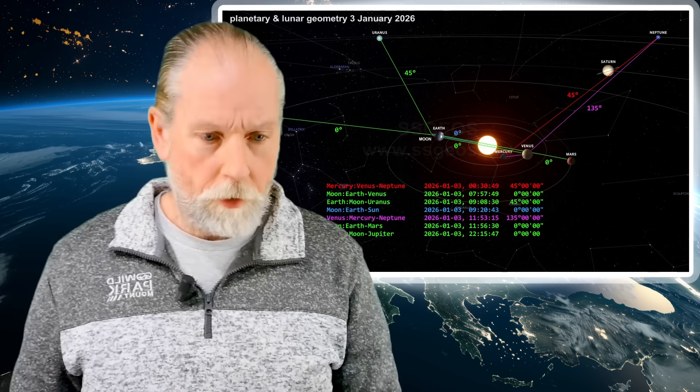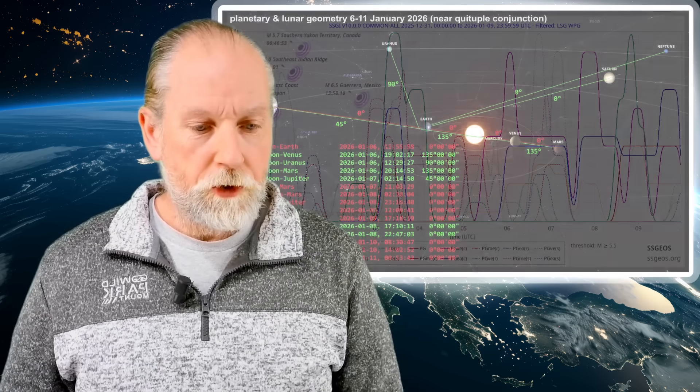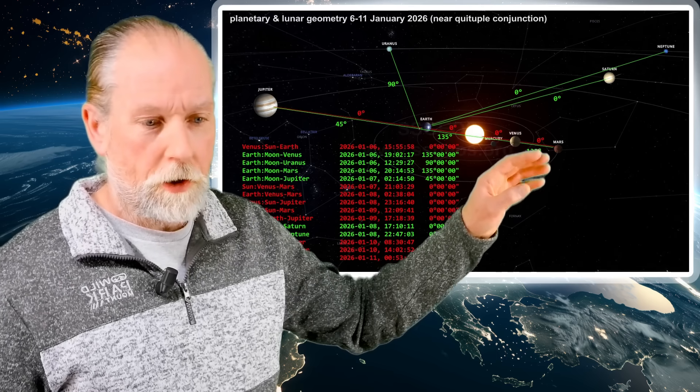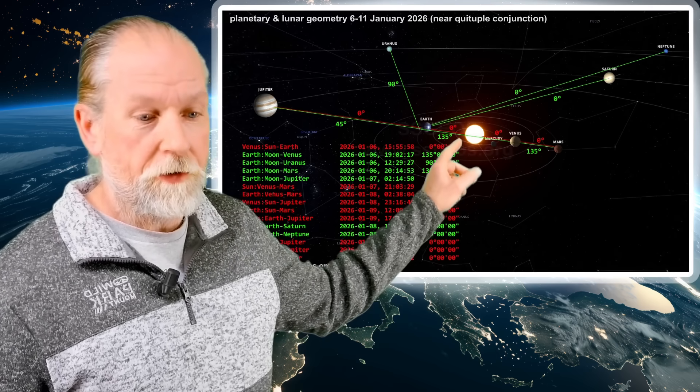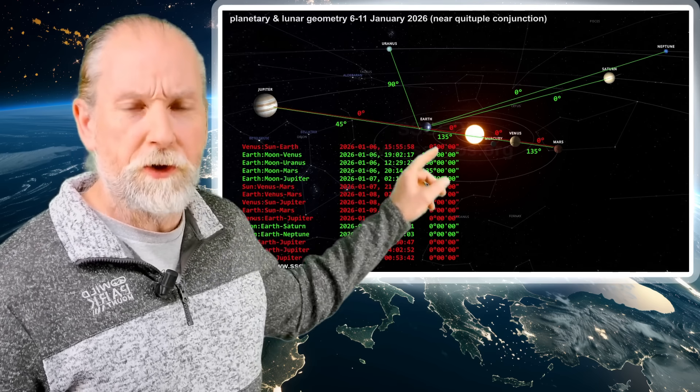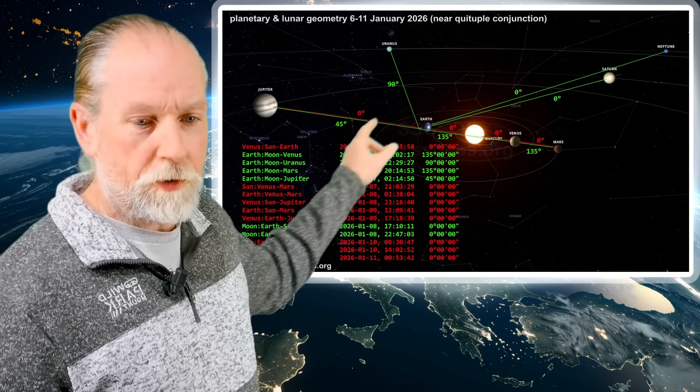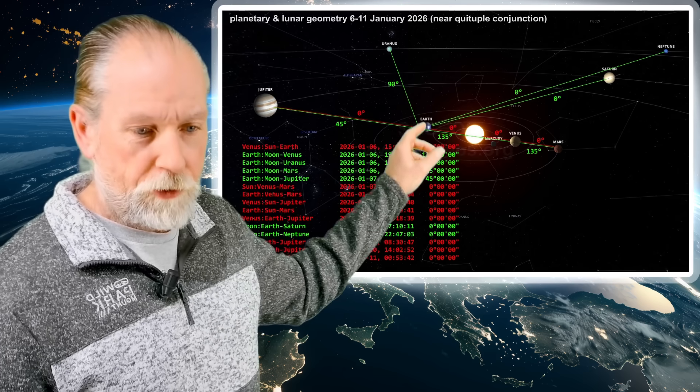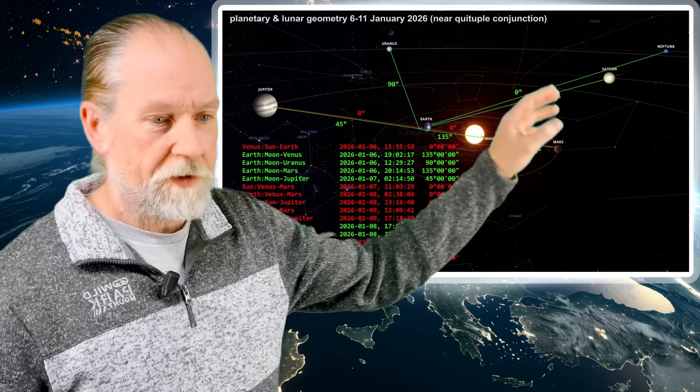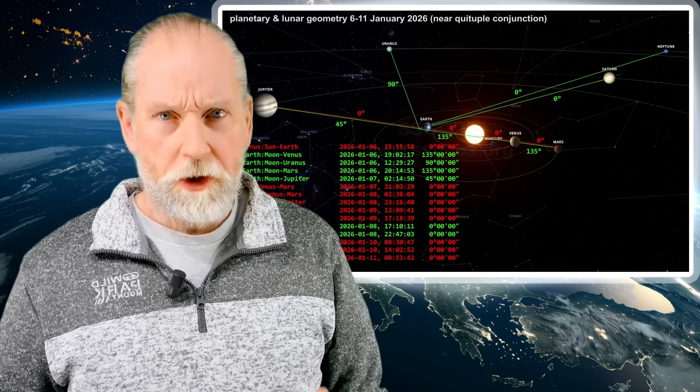On top of that, we're going to have another convergence starting on the 6th - a very unique quintuple alignment with Mars, Venus, the Sun, Earth, and Jupiter. That's starting on the 6th until the 11th, producing nine planetary conjunctions. In addition, we have quite some lunar geometry - semi-right angle of Jupiter, right angle with Uranus, semi-right angle 135 degrees with Venus and Mars, and conjunctions with Saturn and Neptune. That's all happening from the 6th to the 9th with planetary conjunctions up until the 11th.